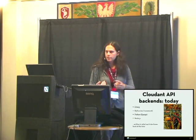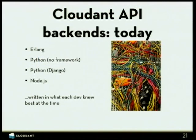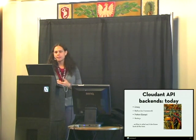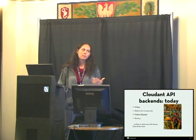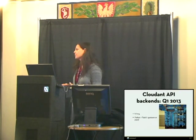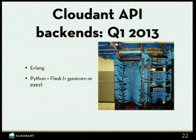Our backends today obviously include Erlang. There's Python with no framework, like Clue. Some of our API endpoints on the public website are in Django. And some of it, unfortunately, is in Node. It was basically written in the language the dev responsible for the task knew best at the time — organically grown, not necessarily designed as an actual application. So our goals — this is going to be introduced next quarter — we're going to have two backends: Erlang obviously stays, but we're going to add Python and Flask, and probably Gunicorn.